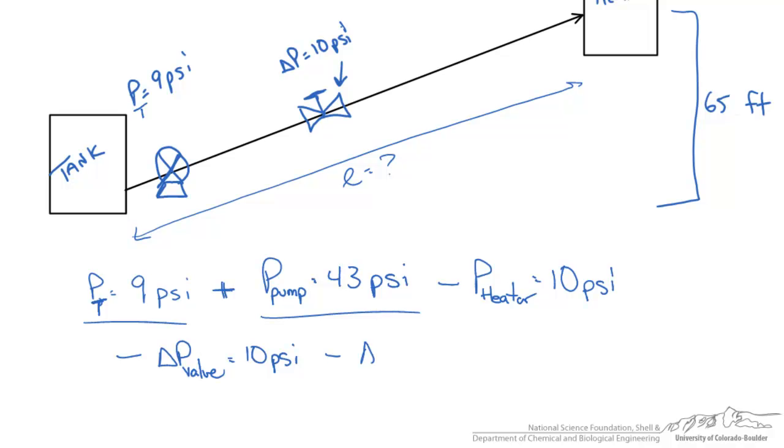We're also going to subtract out the losses due to elevation, delta p elevation. Based on our heuristic, our losses associated with elevation are 4 psi per 10 feet of elevation change. Since we're going up, these are going to be lost.